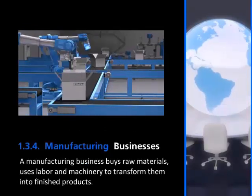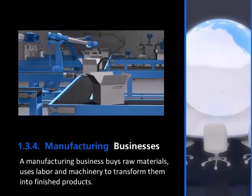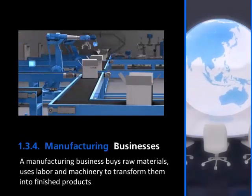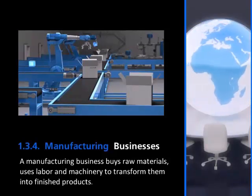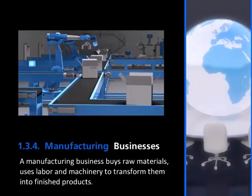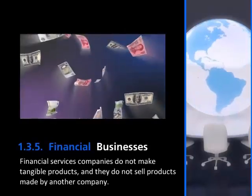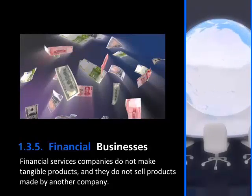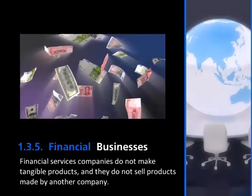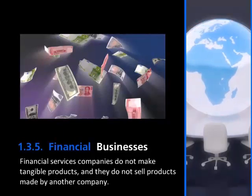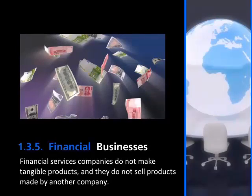A manufacturing company makes the products it sells. Manufacturing companies vary in size and complexity — from making clay pots in a garage-sized space to automobile giants such as Ford and General Motors, owned by thousands of people and employing hundreds of thousands of workers. Financial services companies do not make tangible products nor sell products made by another company — they deal in services related to money. Banks lend money to borrowers for cars, houses, and furniture. Another type of financial services company is an insurance company, which provides financial protection in the case of loss of life or property.